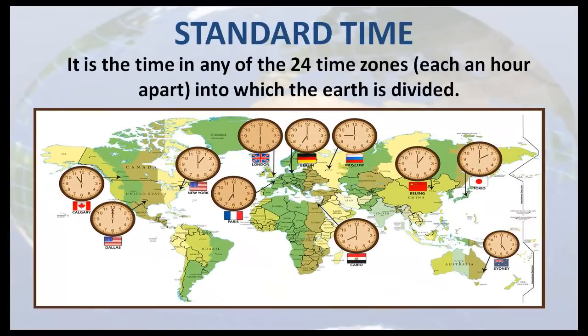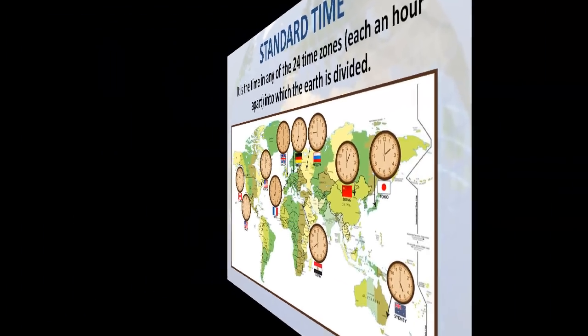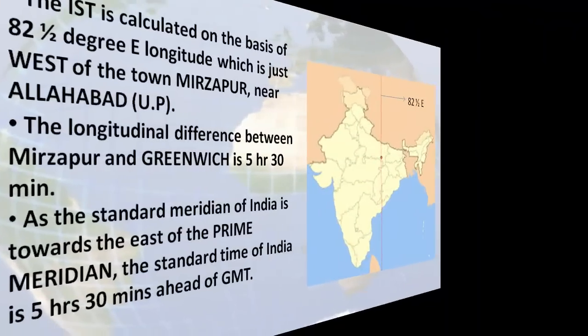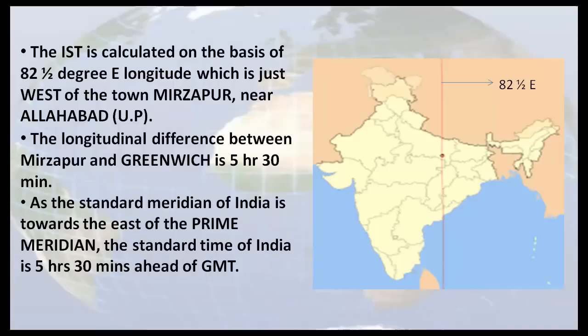Standard time is the time in any of the 24 time zones into which the earth is divided. The Indian standard time is the time observed throughout India and Sri Lanka. It is calculated on the basis of 82 and a half degrees east longitude, which is just west of the town Mirzapur near Allahabad. The longitudinal difference between Mirzapur and Greenwich is 5 hours 30 minutes. As the standard meridian of India is towards the east of the prime meridian, the standard time of India is 5 hours 30 minutes ahead of GMT.